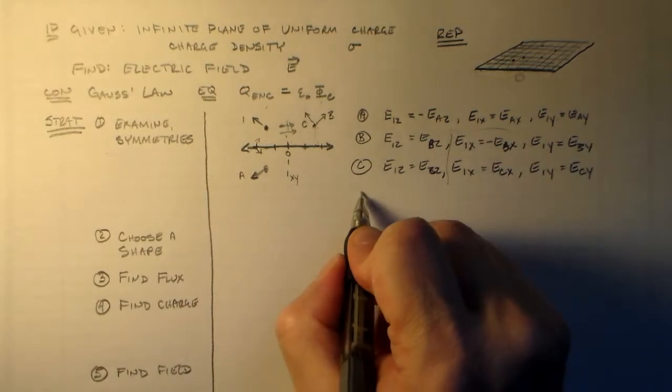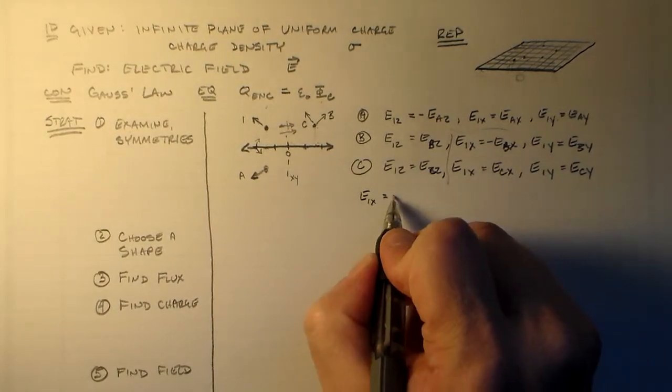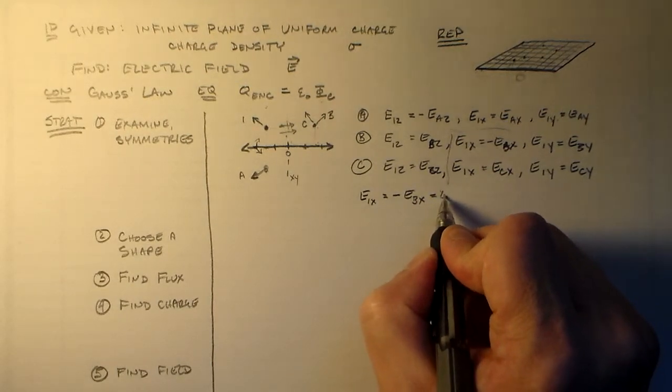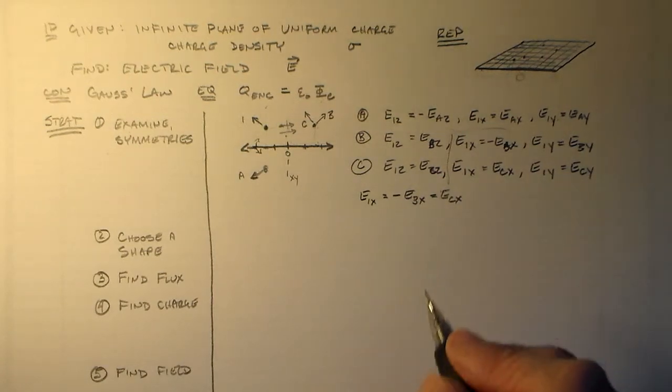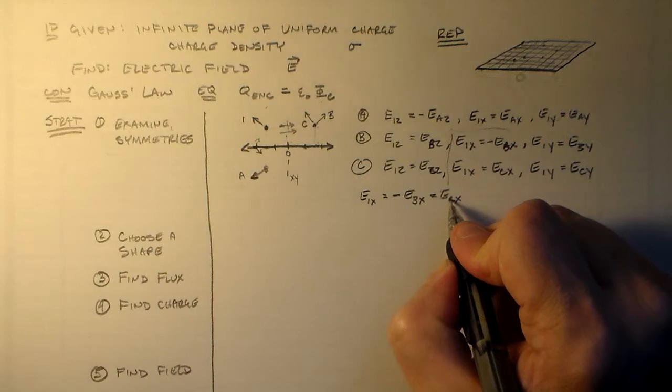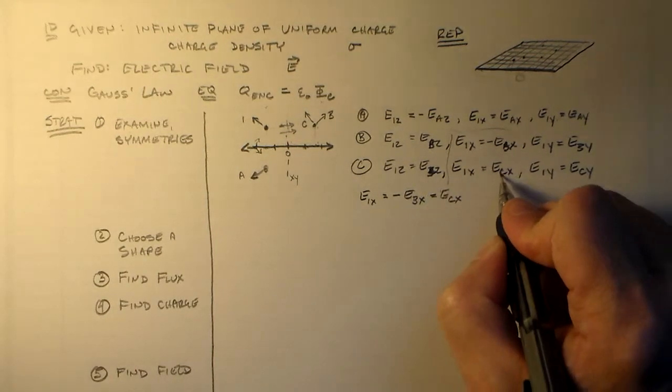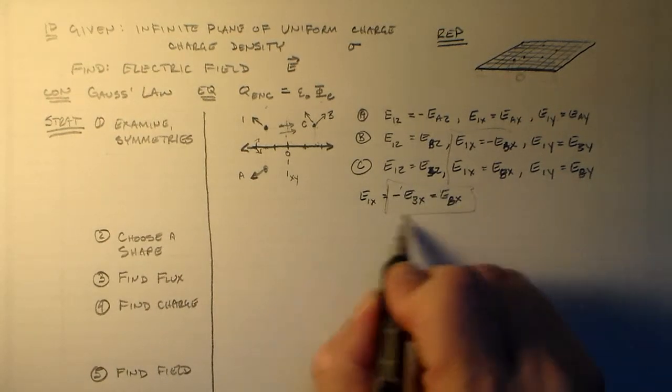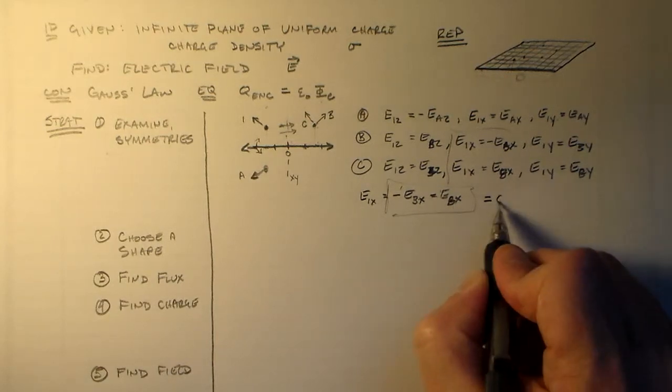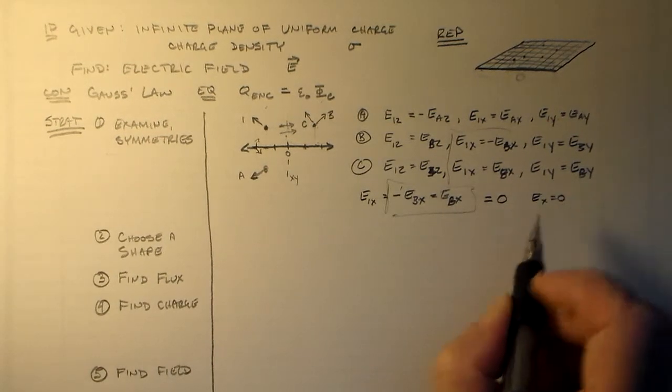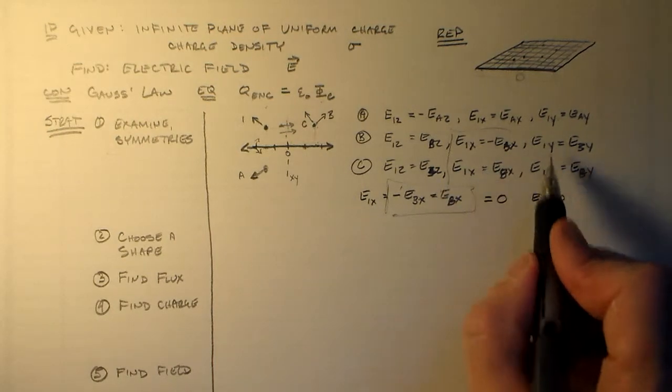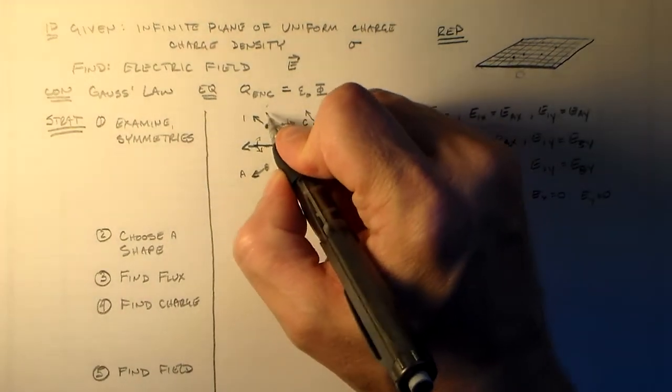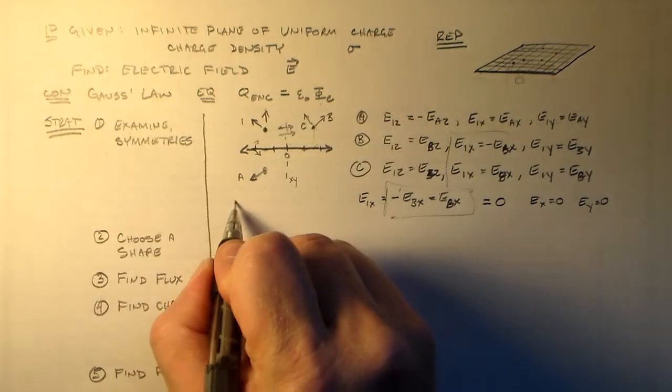So if we put these two together, we say E1x is equal to minus Ebx is equal to Ecx. These two guys are equal, which means that if those are equal, they're equal to zero. So Ex is equal to zero. And like I said previously, anything we say for x, we can say for y, because of the rotational symmetry. So Ey is equal to zero. Which means that the field is always going to be pointing in the z direction.